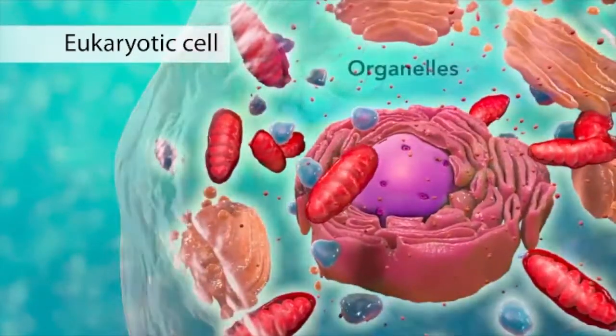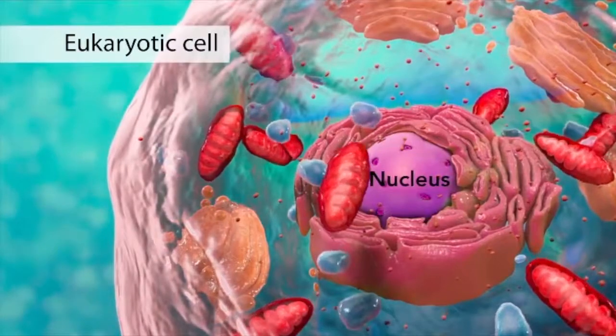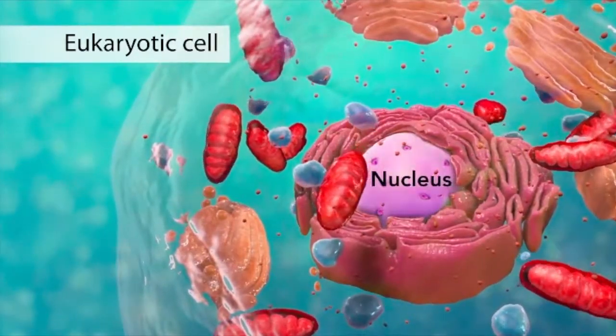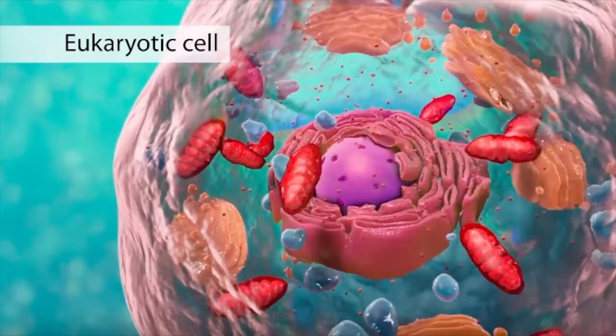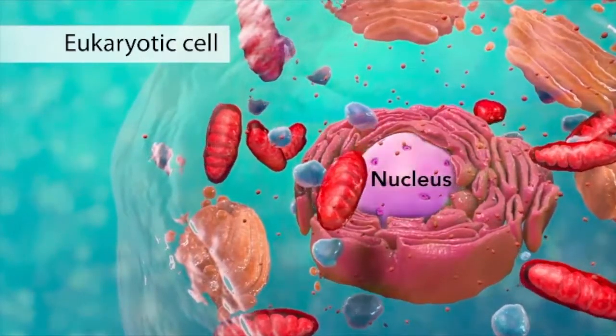The nucleus is an organelle found in eukaryotic cells. Inside its fully enclosed nuclear membrane, it contains the majority of the cell's genetic material. This material is organized as DNA molecules, along with a variety of proteins, to form chromosomes.